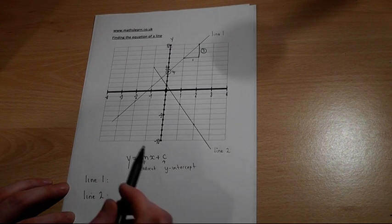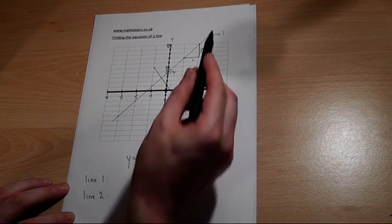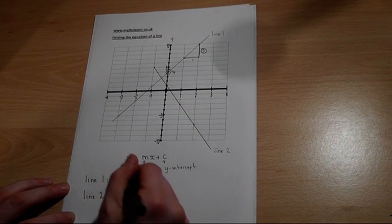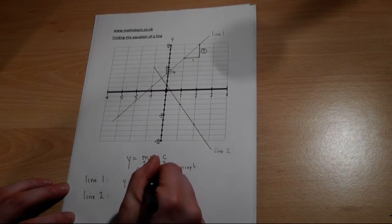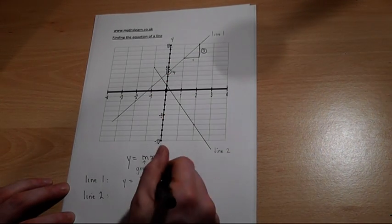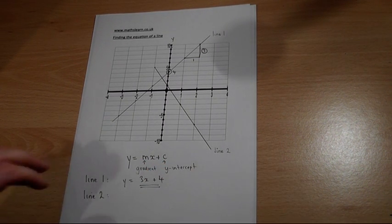So it's got a y-intercept of four and a gradient of three, so therefore line one has an equation of y equals gradient is three, so three x, intercept is four, so plus four. That is its equation.